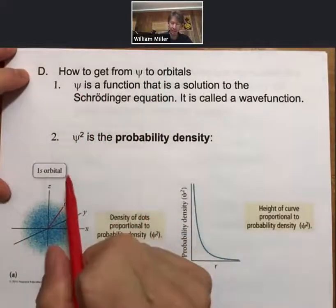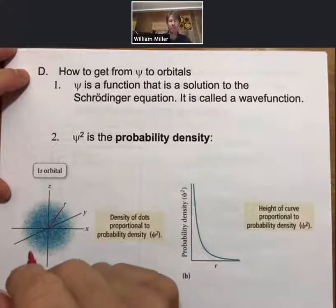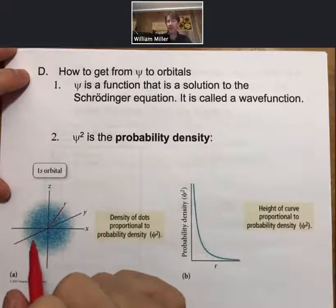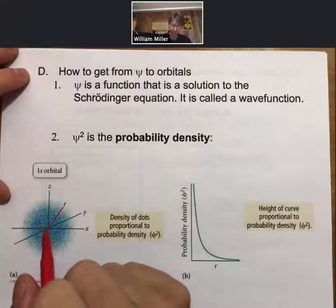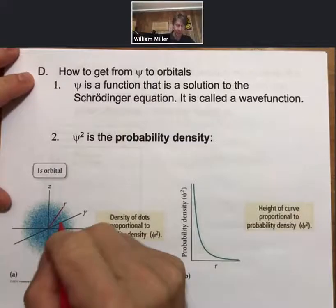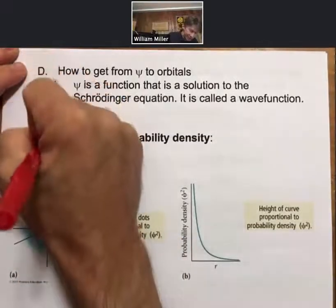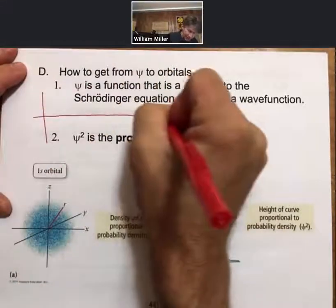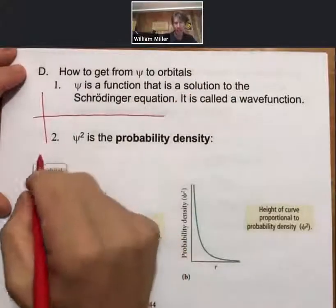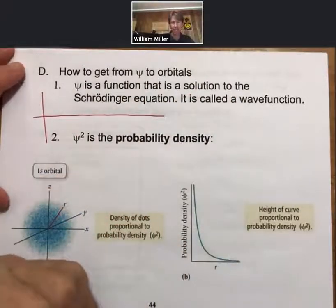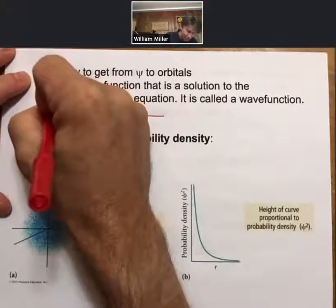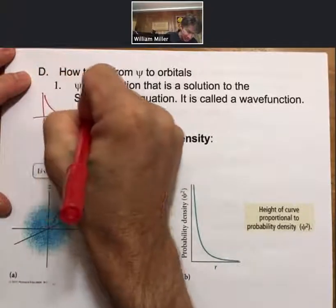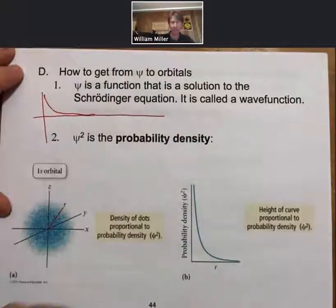So psi is a function that is a solution to the Schrodinger equation. It is called a wave function. And so it has the general form of a wave with an exponential decay away from the nucleus. And so if I were to draw some waves here, and I were to do it in red for psi for 1s, it basically looks like this. It does an exponential decay.